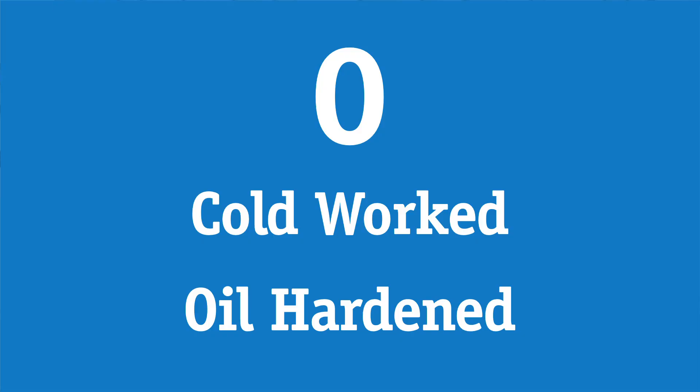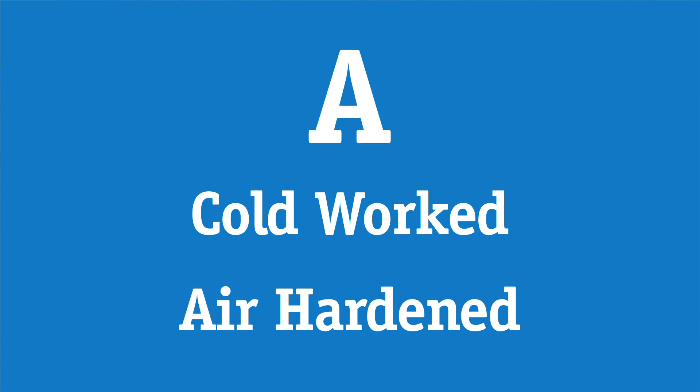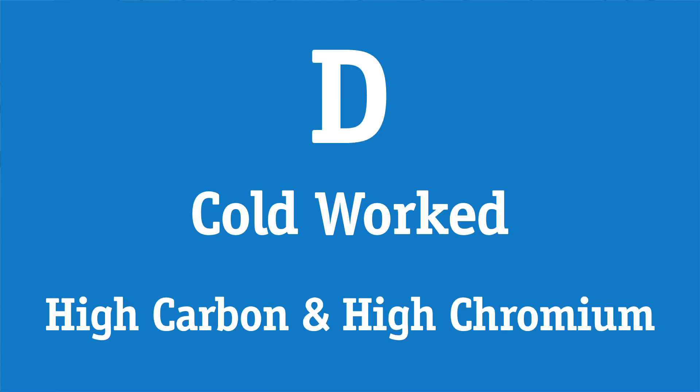O is for cold work steels that have been oil hardened. A is for cold work steels that have been air hardened. And D is for cold work steels that have high carbon, high chromium. These cold work grades typically have high hardenability and wear resistance with average toughness. Both the oil and air hardened grades reduce the distortion caused by quick water quenching and are less likely to crack. The D grade class contains approximately 10 to 13% chromium and typically retains its hardness at increased temperatures.